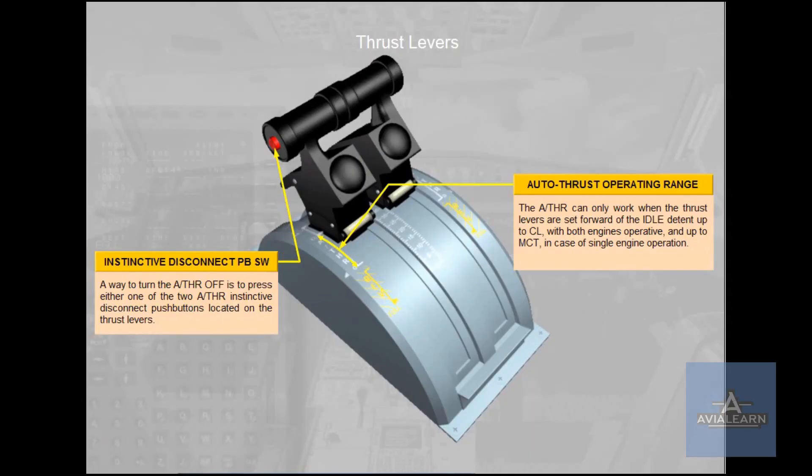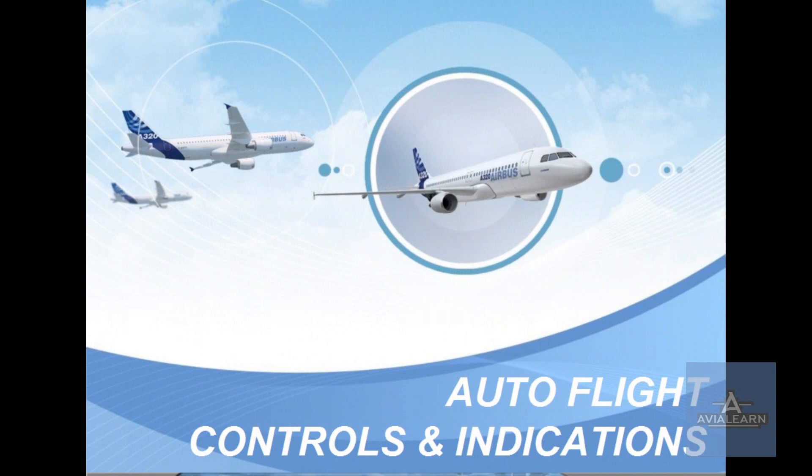Thrust Levers — Thrust Levers Instinctive Disconnect Push Button Switch. A way to turn the Autothrust off is to press either one of the two Autothrust Instinctive Disconnect Push buttons located on the thrust levers. The Autothrust can only work when the thrust levers are set forward of the idle detent, up to CLIMB with both engines operative, and up to maximum continuous thrust in case of single engine operation.